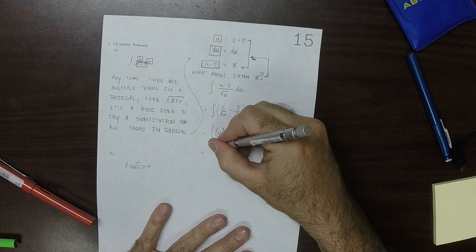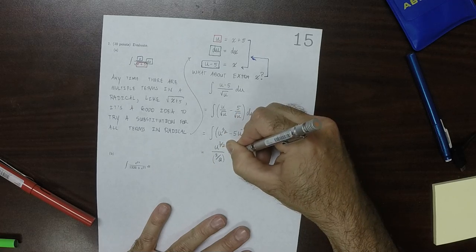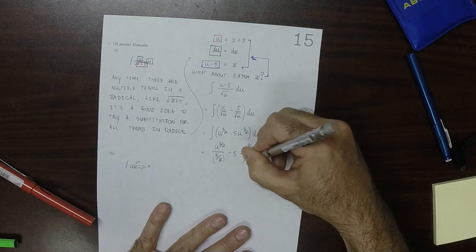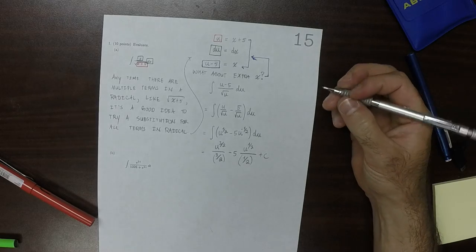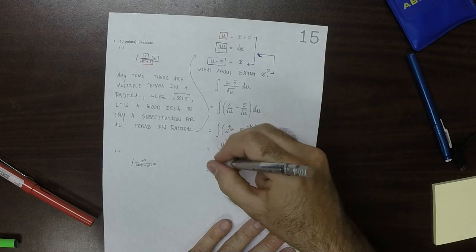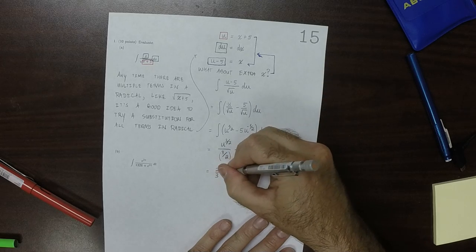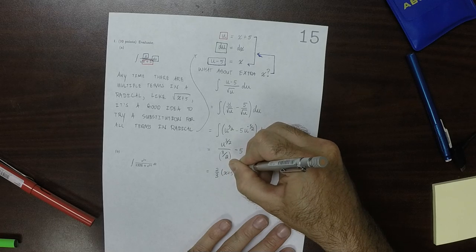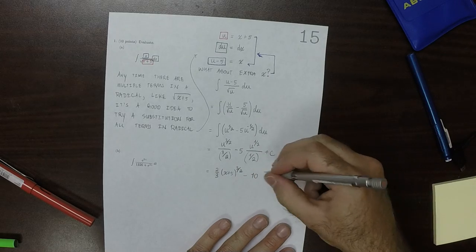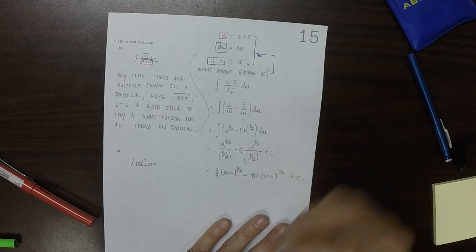Now we can use the power rule, so this would be u to three-halves divide by three-halves minus 5 u to one-half divide by one-half plus a constant. And then simplifying and replacing u's with x's, this would be two-thirds u, but that was x plus 5, so x plus 5 to three-halves minus 10, because that division by half is the same as multiplication by two, x plus 5 to one-half plus a constant.